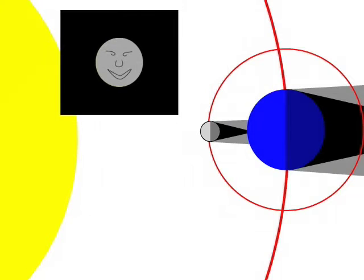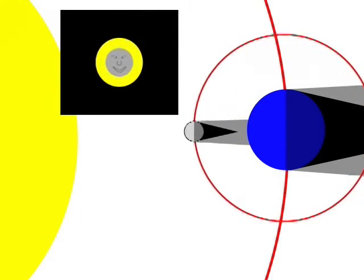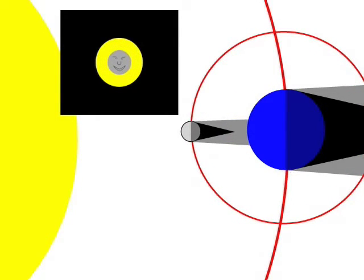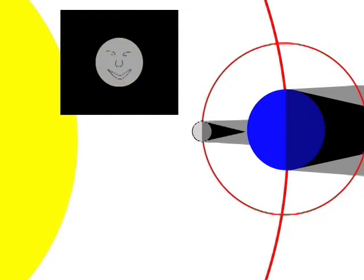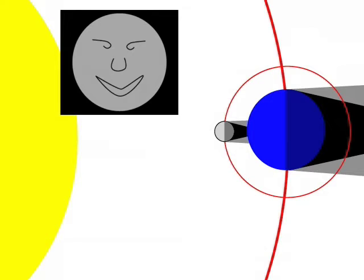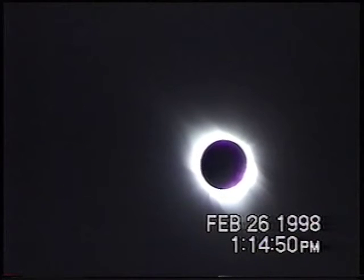If the Moon were smaller or farther away, we would never have total eclipses, since it would not be large enough to cover the entire Sun. If it were larger or closer, then its shadow would be larger and the total eclipse would cover much more of the Earth. But we would not see the Sun's corona during a total eclipse.